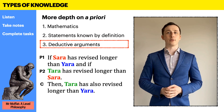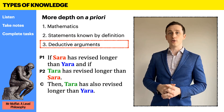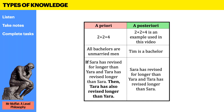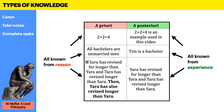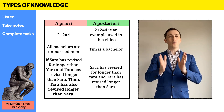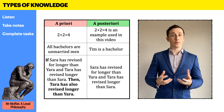So we've got our three categories: mathematics, statements known by definition, and deductive arguments. Let's put up a table now so we can compare similar ideas in a priori and a posteriori versions. Hopefully you've now got a much better idea of how these terms can be applied. Have a go at these challenges, and I will see you in the next lesson.